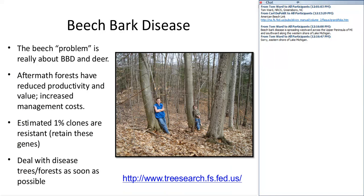Beech bark disease creates a problem, but the problem is not really just the disease — it's also deer. This picture from Arnot Forest shows a diseased tree in the foreground and another in the background. I had thought two nearby trees looked clean and potentially resistant, but when I walked down and looked at them, those trees that appeared clean on one side looked infected on the opposite side — the infection was isolated just to a vertical column of that stem.